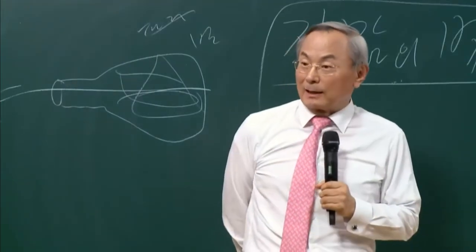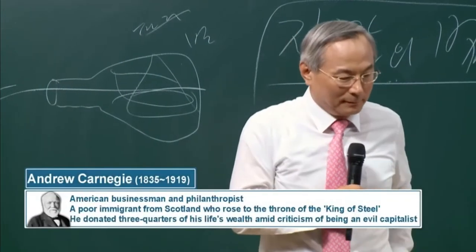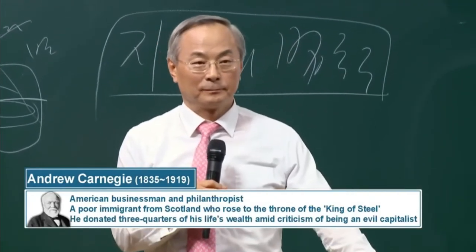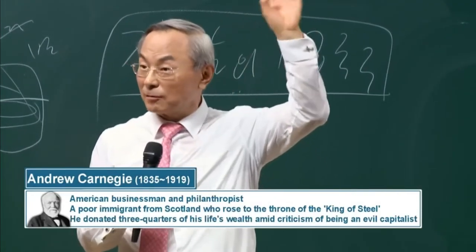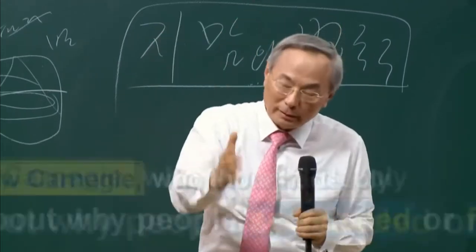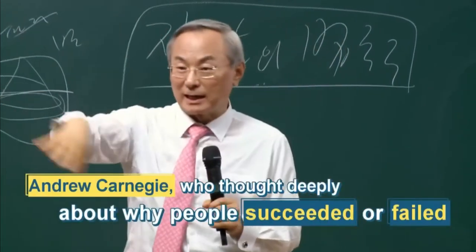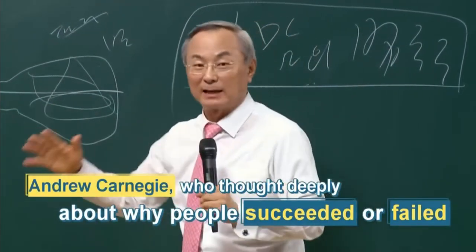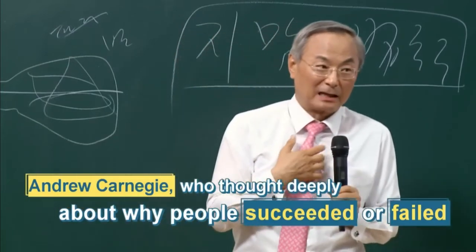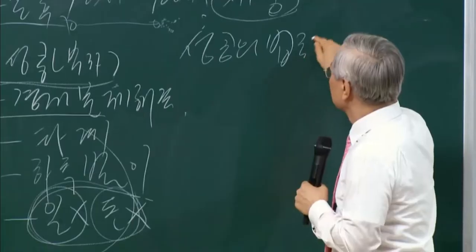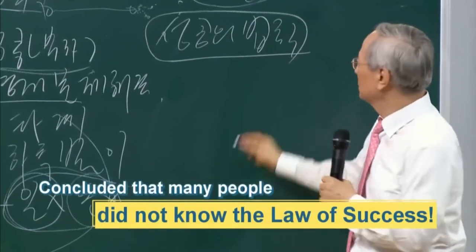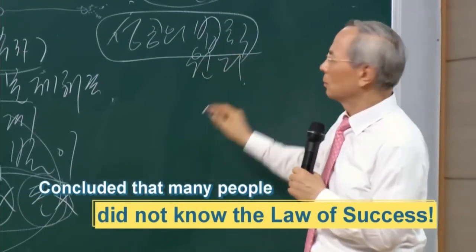A man named Andrew Carnegie was born into a poor family but became super rich. He became the king of steel. How do some people become successful and others failures? He thought carefully about it. He realized that people just didn't know the methods and principles of success.